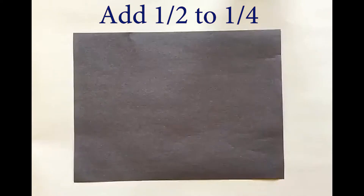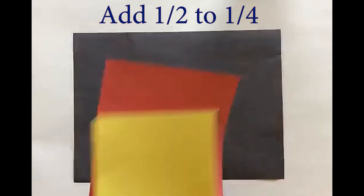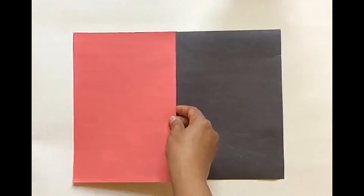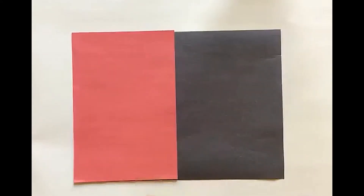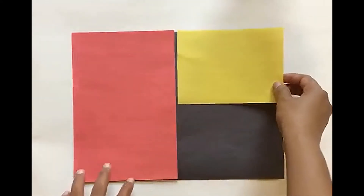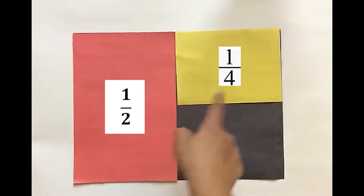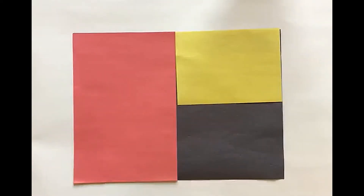Let's add fractions with unlike denominators. In this case, let's add one-half with one-fourth. As you can see, the one-half looks different than the one-fourth. However, I can find an equivalent fraction for one-half using my fourths.